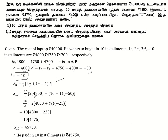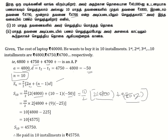A equals 480, N equals 10 minus 1, and D equals minus 50. If we have two terms: S equals 10 by 2, equals 2 into 480. If we have S equals 5 into 2 equals 5 into minus 1. If we have two terms equals minus 2, equals 4, equals 9 to minus 2 equals 9.